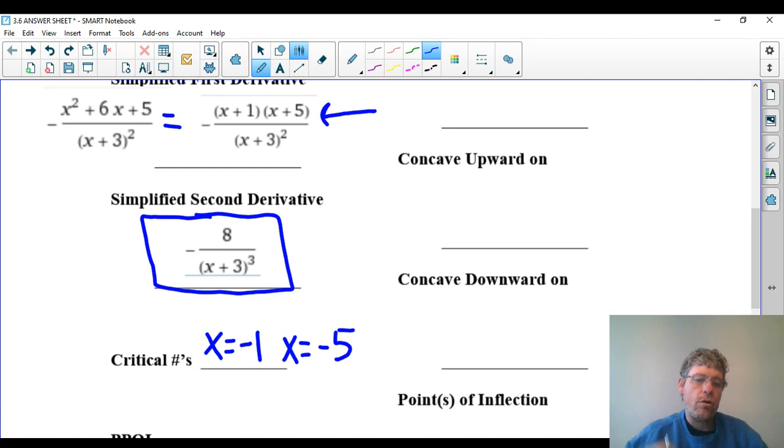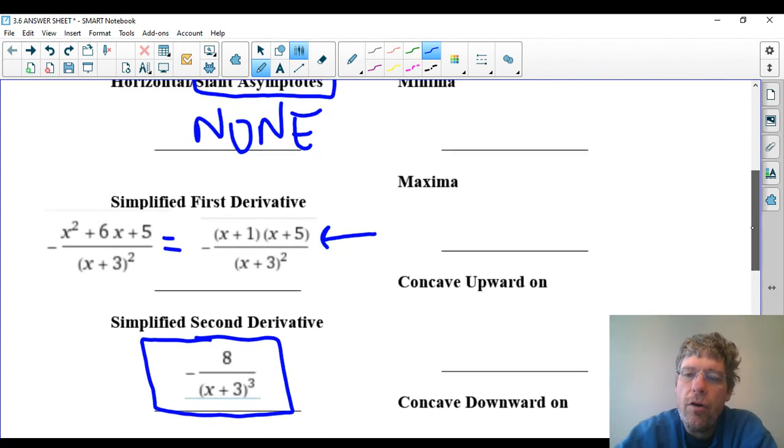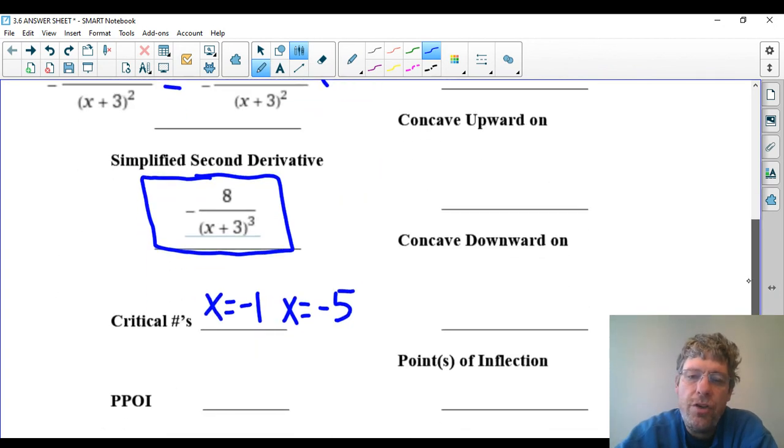Now, remember here, critical numbers are the only places that mins and maxes can occur. So keep that in mind when we go to mins and maxes. If we do have them, it can only be x equals negative one and x equals negative five and their y-coordinates.